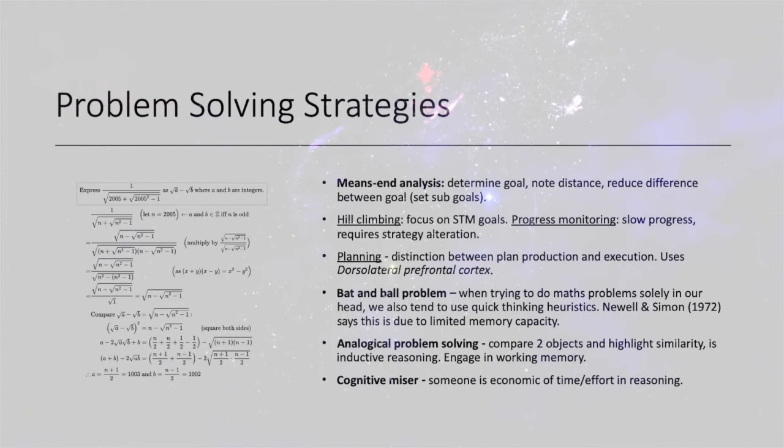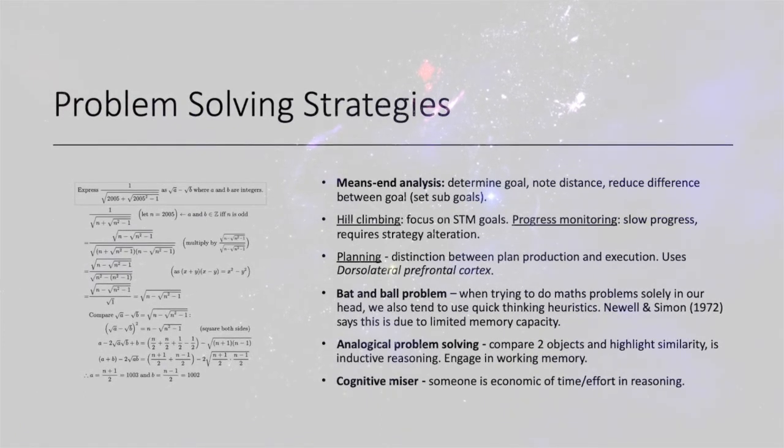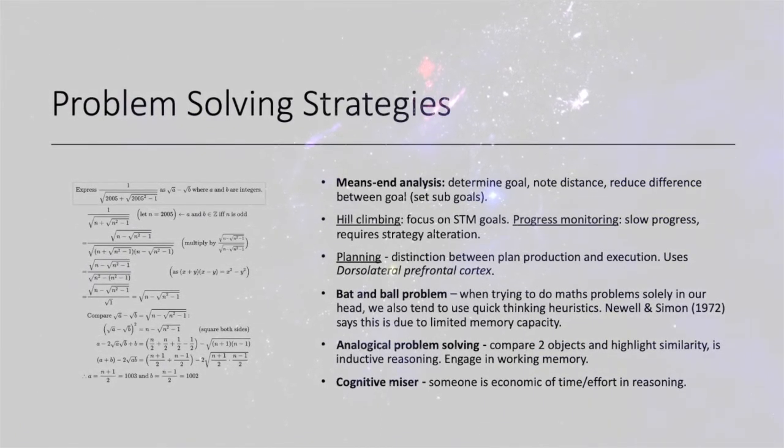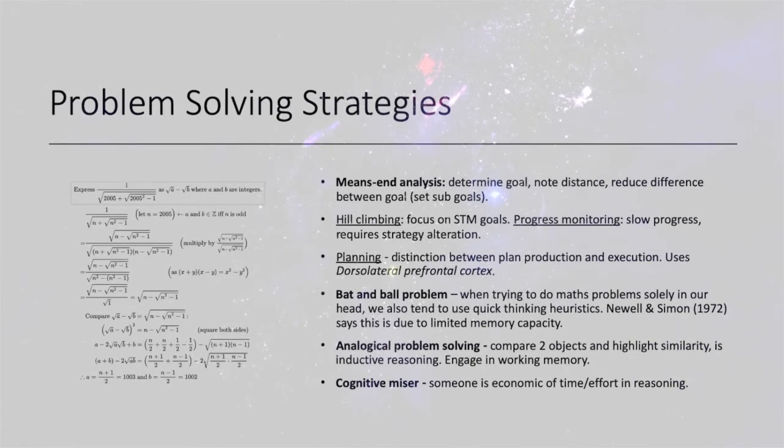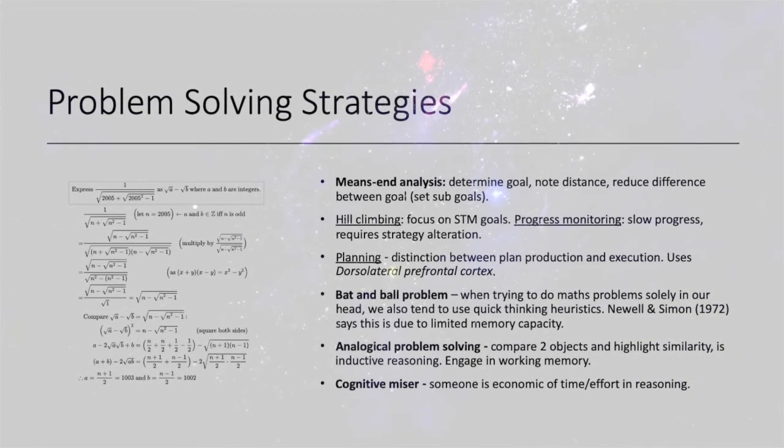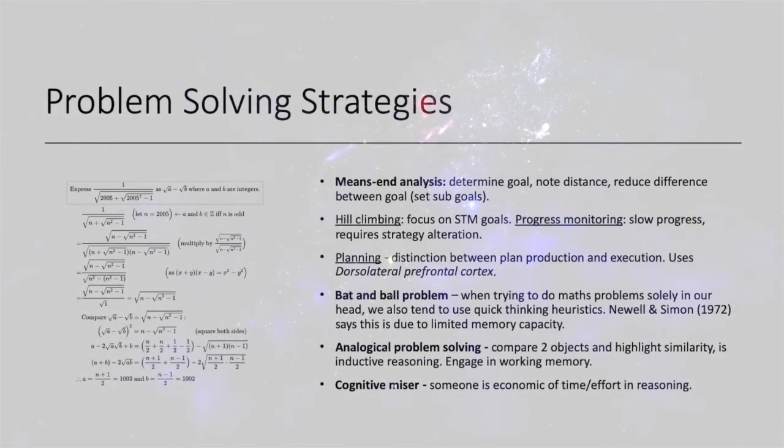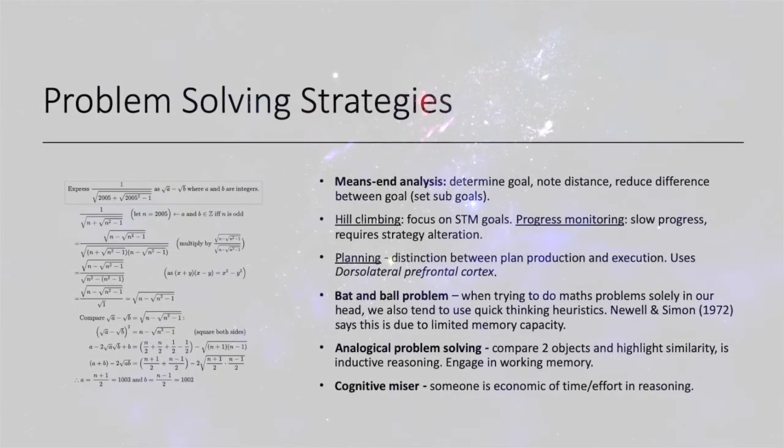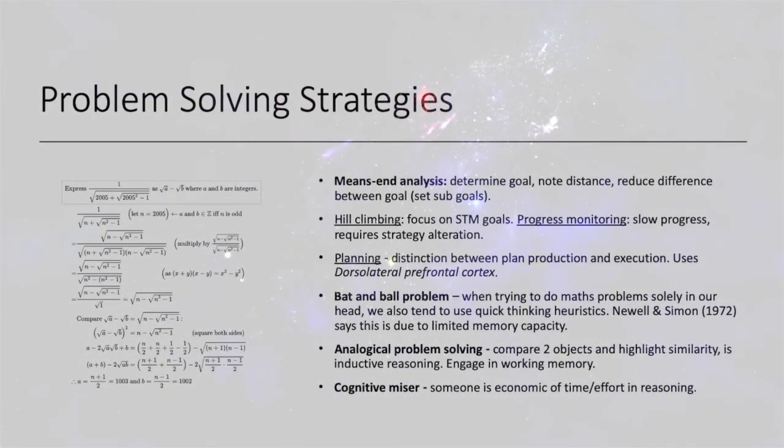Hill climbing, as well as means-end analysis, involves progress monitoring, which has slow progress and requires strategy alteration. Planning is the distinction between plan production and execution, and it uses the dorsolateral prefrontal cortex.